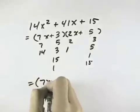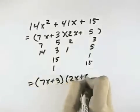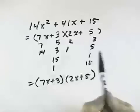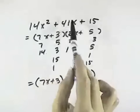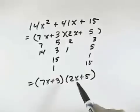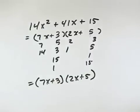So it looks like 7x plus 3 times 2x plus 5 are the correct choices to give me the 15 in the last term, the 14x squared for the first term, and the 41x in the middle. And neither one can be broken down any further, so that's a completely factored form.